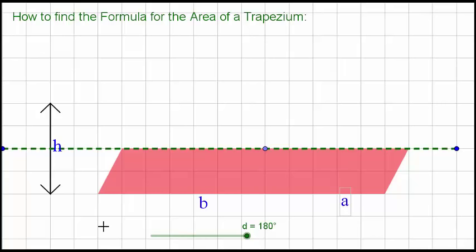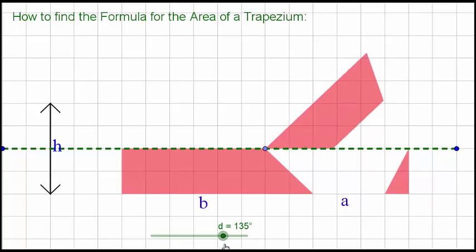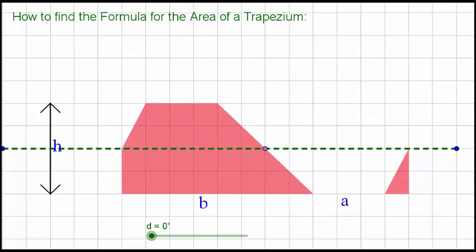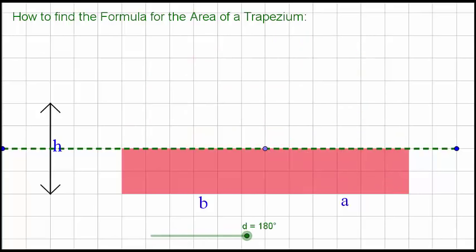Next I'm going to take this little bit of the end away and move it all the way to the other end, and it's going to slot perfectly in place there. So now we actually have a rectangle. We can still see where our top half of the trapezium has fallen into, but basically we have a rectangle.